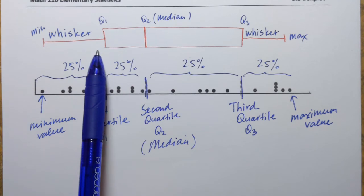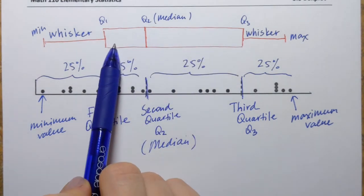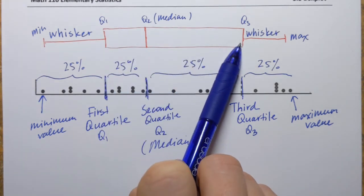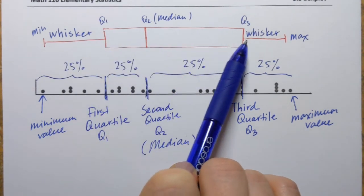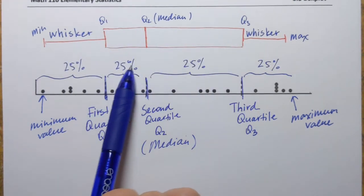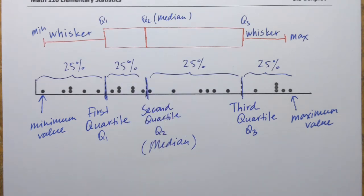And the length of the box is called interquartile range. And it pretty much measures the spread of the middle 50% of observations. Remember, each portion of the box plot represents 25%, so that would be the middle 50% IQR. Let me write this down.